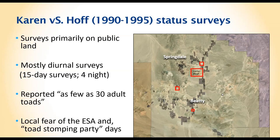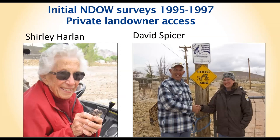Some properties only reported about 30 adult toads during those initial daytime surveys, since toads in the Mojave desert are sheltering from over-100-degree midday heat. There was also fear of the Endangered Species Act, with some locals reportedly holding toad-stomping parties fearing an endangered listing might compromise their water use. However, predecessors built partnerships with locals who actually reported hundreds or thousands of toads on their properties.